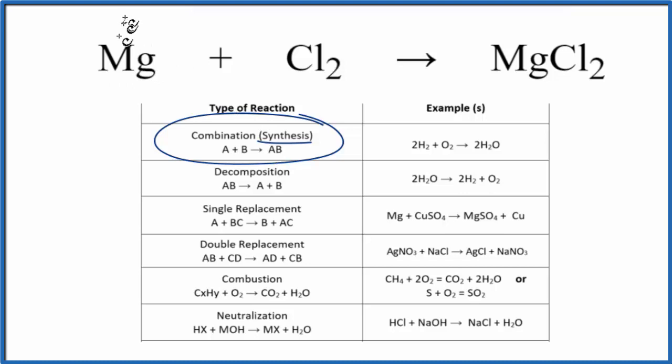You can think of magnesium here as A, plus B combine to form AB - a combination or synthesis reaction. This is Dr. B with the type of reaction for Mg + Cl2. Thanks for watching.